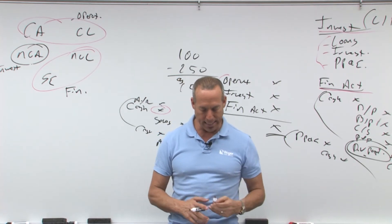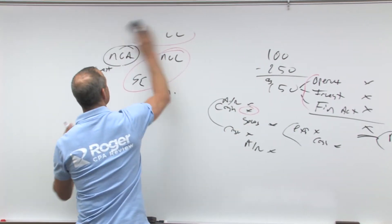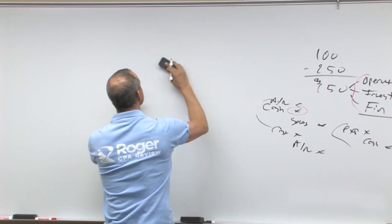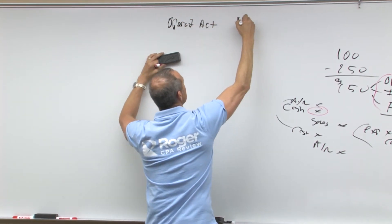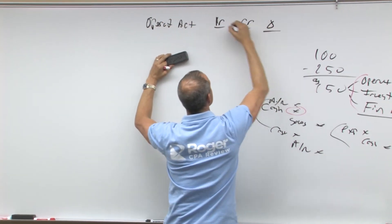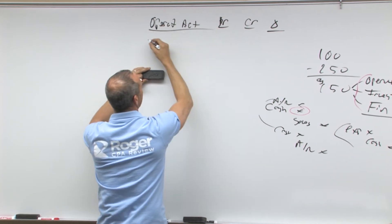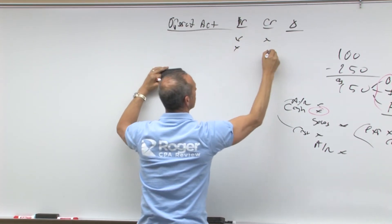So let's say in this case, for example, we'll start over here. We've got our statement of cash flows. So we've got our operating activities and we have a debit, credit, and a delta is my change.